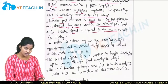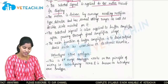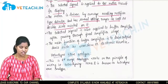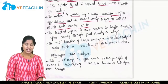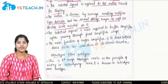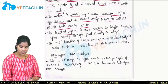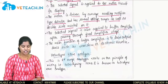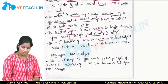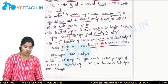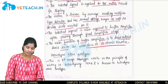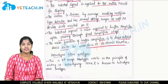The selected signal is applied to the meter circuit for display. The meter is driven by an average reading rectifier-type detector and has several voltage ranges as well as the desired scale markings. The selected signal is also applied to the buffer amplifier and passes through the final amplifying stage. The main function of the buffer amplifier is to drive output devices such as recorders or electronic counters.